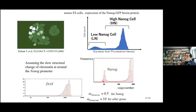Assuming mildly adiabatic transcription complex formation for the other genes, they show a single-modal distribution. This would rather explain the experimental data.